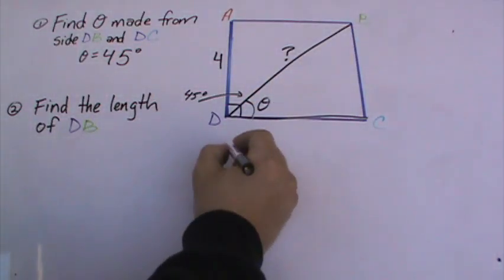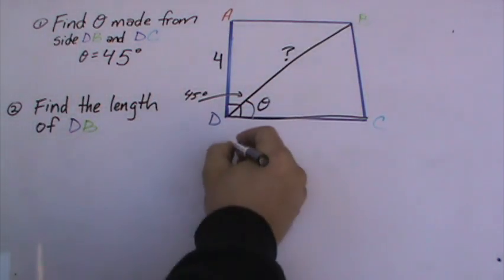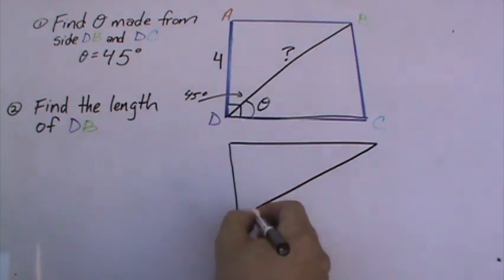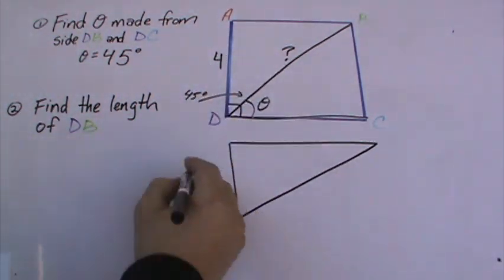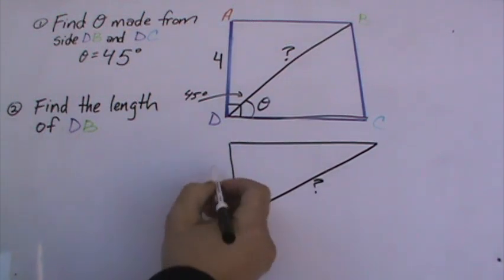We want to kind of take this and just picture it like this. We're looking for this, and we know that this is 4.